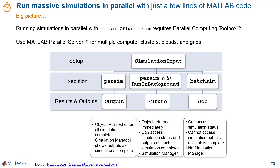Here is a quick big picture summary of parallel simulation capabilities. You set up the parallel simulations with a simulation input object. Then you can execute with parsim, parsim while running in background, or batch sim. These are the type of output objects and their properties based on how you choose to execute your parallel simulations. For more details on multiple simulation workflows, you can check out our documentation.